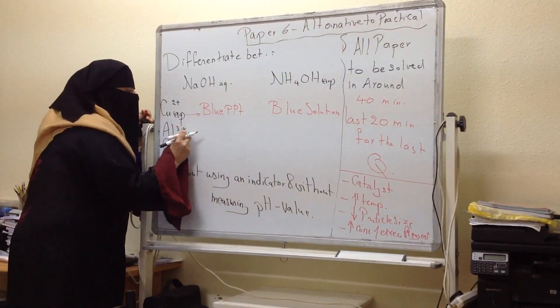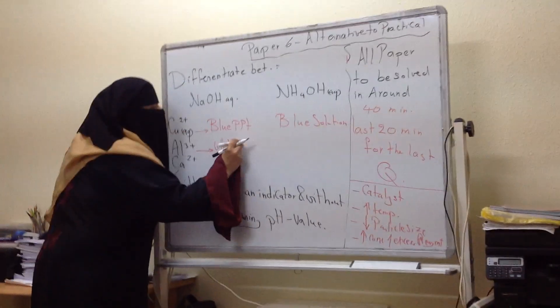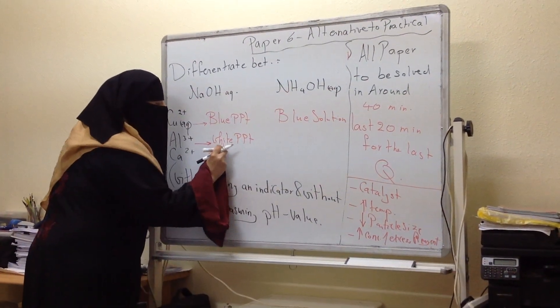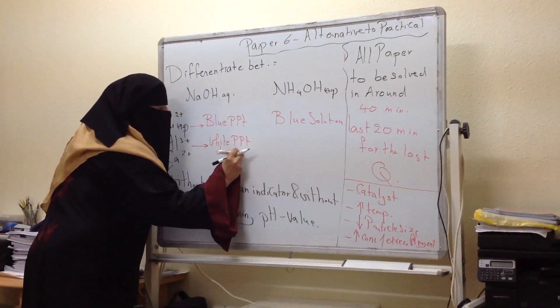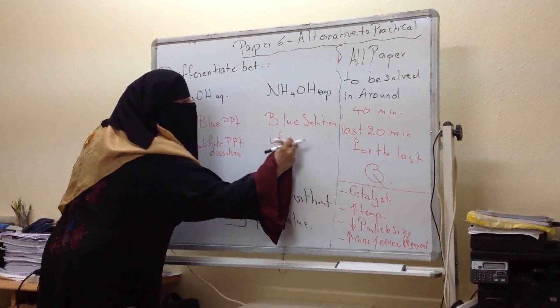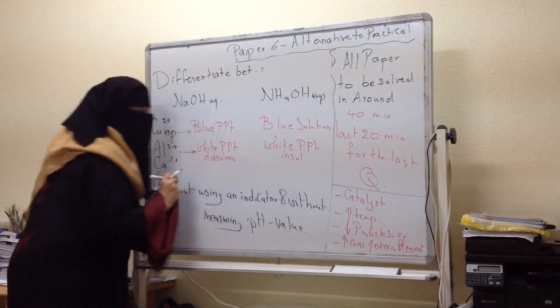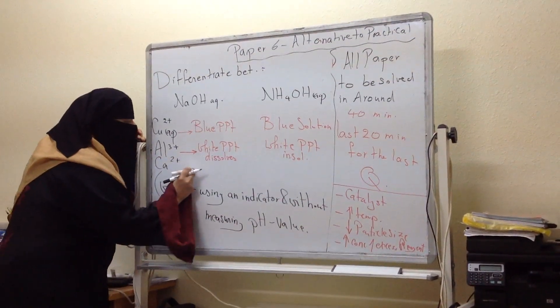The aluminum will give me with sodium hydroxide white precipitate soluble in excess, white precipitate that dissolves. And here it will give me white precipitate insoluble in excess.